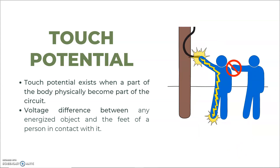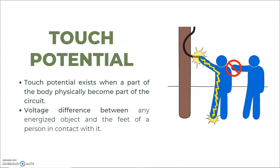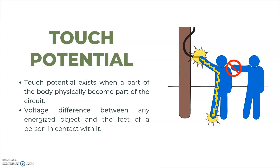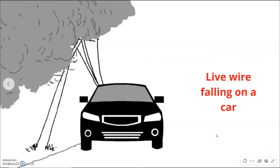The best ways to avoid touch potential are to stay aware of your surroundings, keep an eye out for potential hazards, and stay alert — this will reduce the risk of being injured by energized lines or objects. Do not touch downed power lines or anything they are in contact with, which may include phone or cable lines, utility poles, metal fences, ladders, trees, and possibly the ground itself.